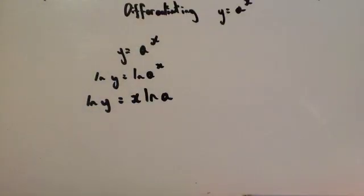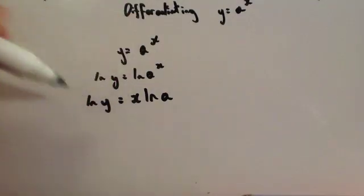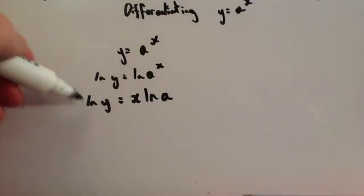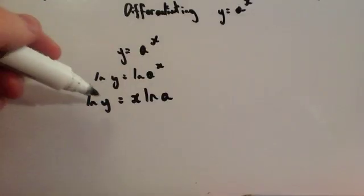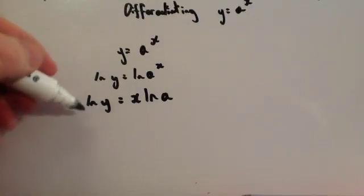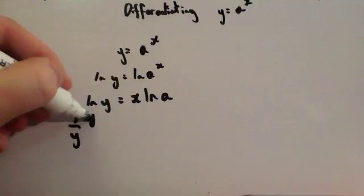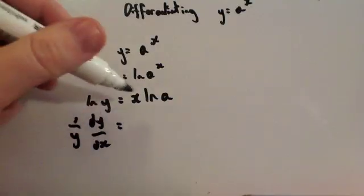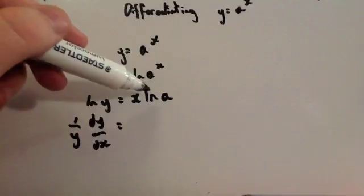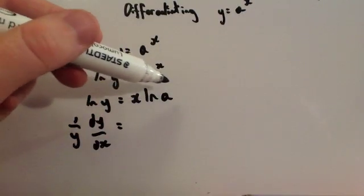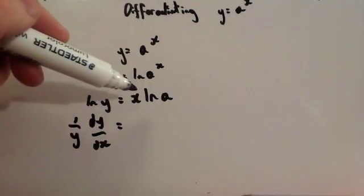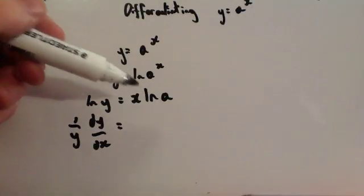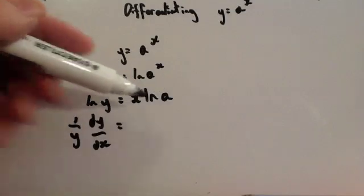Now we can differentiate this. We're differentiating with respect to x, so it's implicit. The differential of ln(y) is 1 over y times dy/dx. Remember, ln(a) is just a number — the natural log of a certain number a — so differentiating ln(a)·x with respect to x is just ln(a), the same as differentiating 5x gives 5, or 8x gives 8.